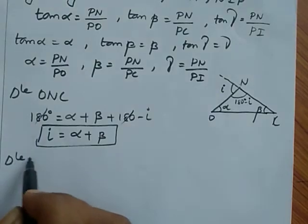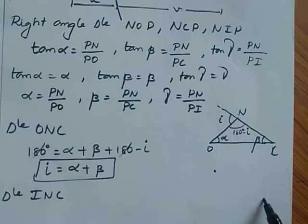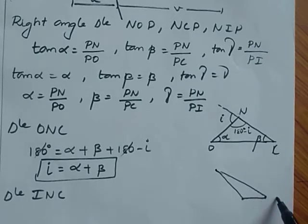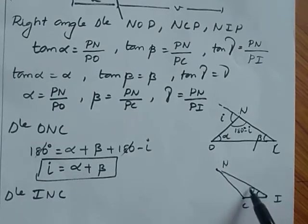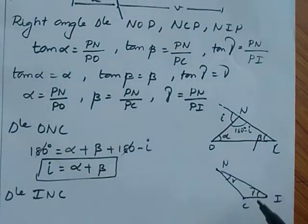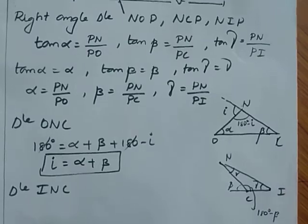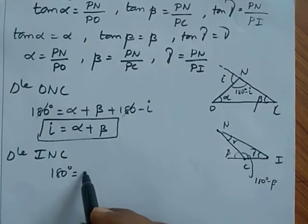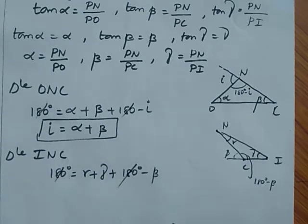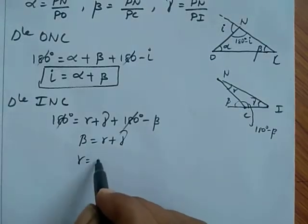Then I consider triangle INC. Here it is N, it is I, and it is C. This is gamma, this is R (angle of refraction), and this is beta — so this angle can be written as 180 minus beta. The summation of angles in the triangle is 180: 180 = R + gamma + (180 - beta). Then 180 cancels, and we get beta = R + gamma, so R = beta - gamma.